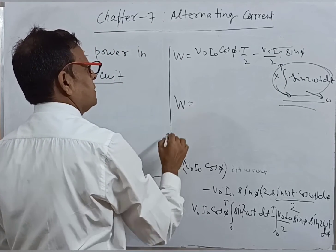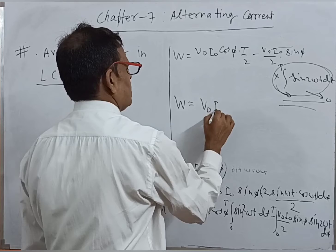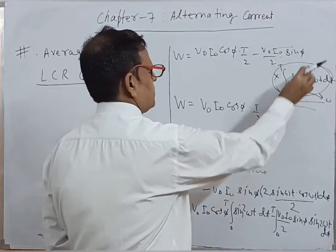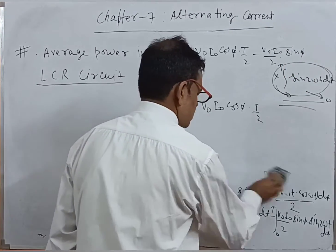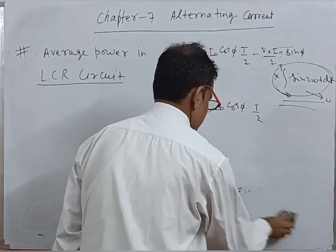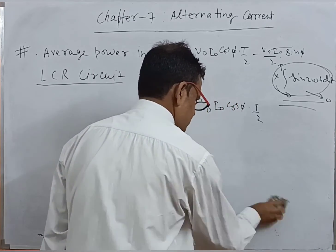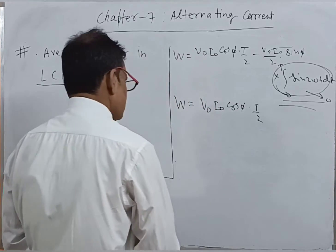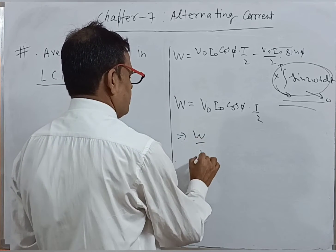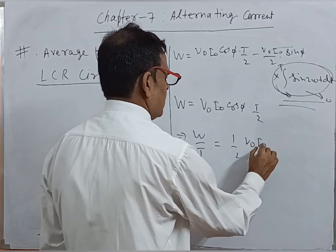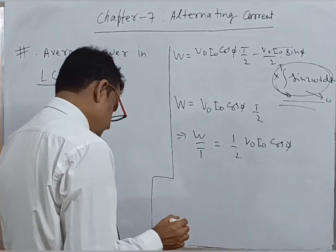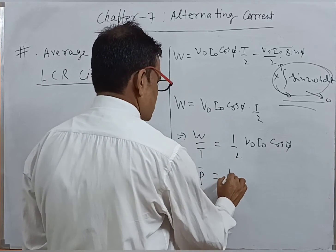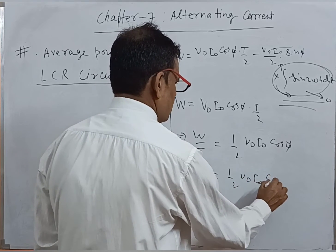The remaining expression gives us W/t, which is the average power. That average power W/t is equal to half V₀I₀ cos φ. So this is the average power: P_avg = ½ V₀I₀ cos φ. This is a very important expression.